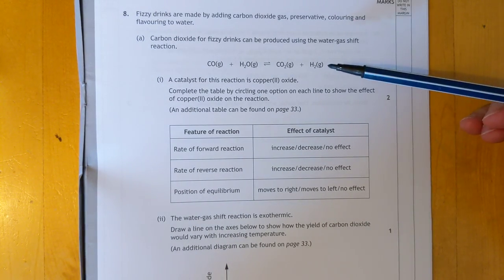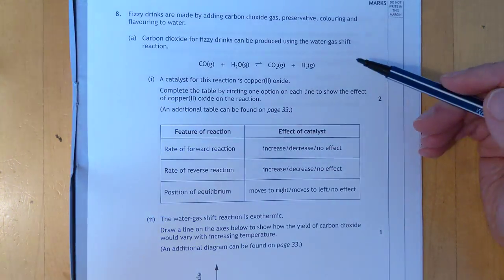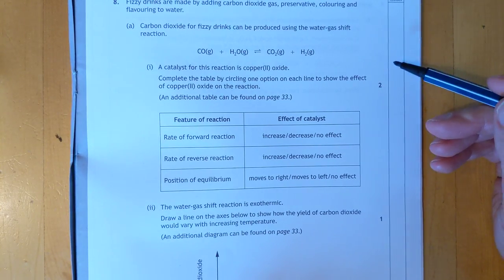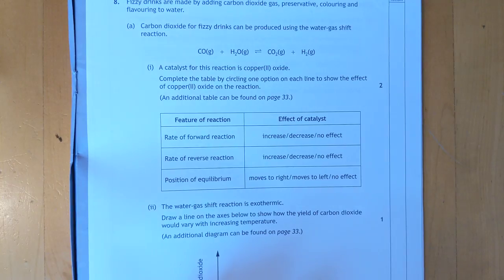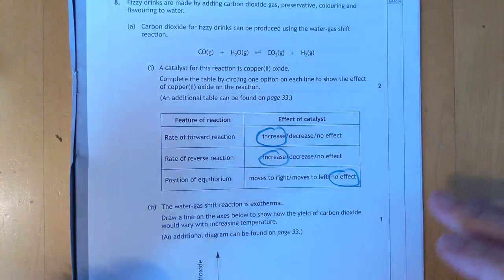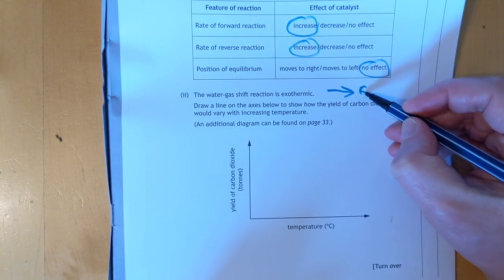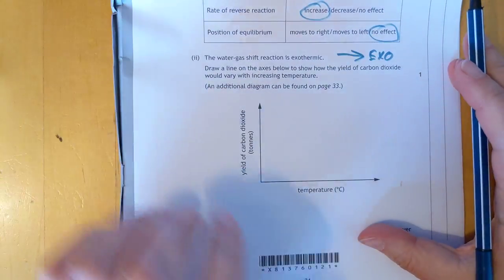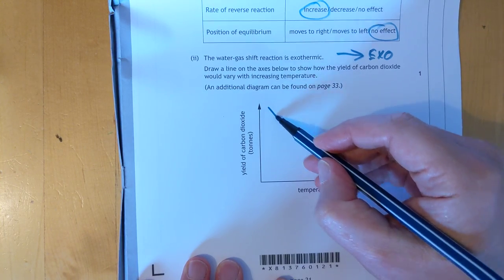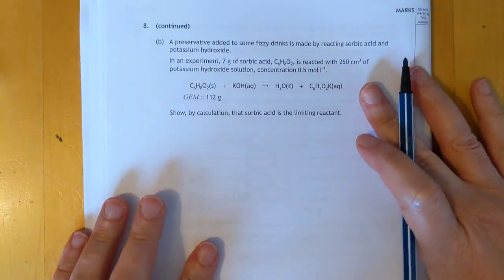Feature of the reaction. What's going on here? Catalyst for this reaction is copper-2 oxide. Complete the table by circling one option on each line to show the effect of copper-2 oxide on the reaction. Almost a trick question time. Catalysts always increase reactions, both forwards and backwards. Position of the equilibrium, no effect. There we go. Water-gas shift reaction is exothermic. As in the forward direction, left-to-right is exothermic. That means the yield of carbon dioxide, which side is carbon dioxide on? Carbon dioxide on the right-hand side. So as you crank the temperature up, then you'll get less and less carbon dioxide made.